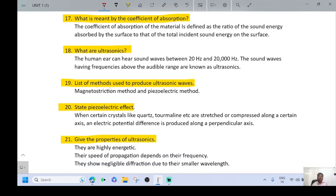List of methods used to produce ultrasonic waves. Magnetostriction method and piezoelectric method are usually used to produce ultrasonic waves.